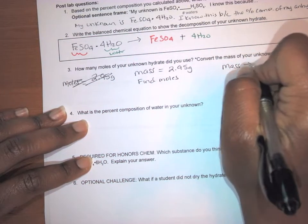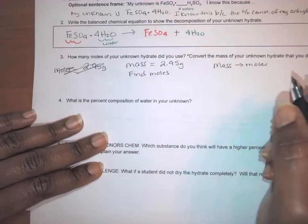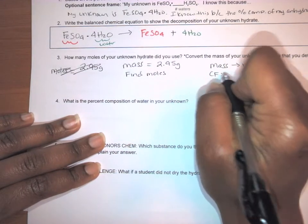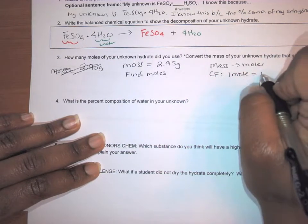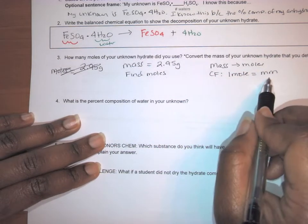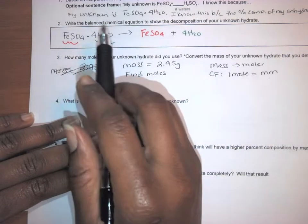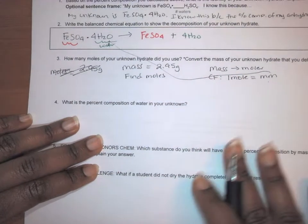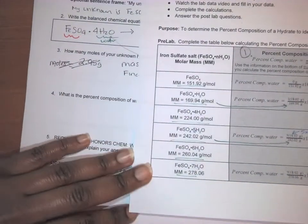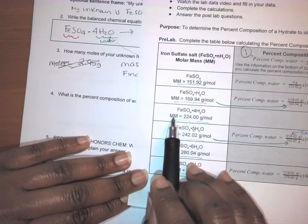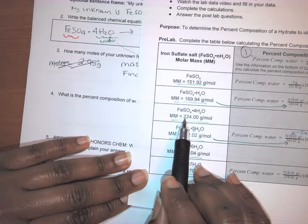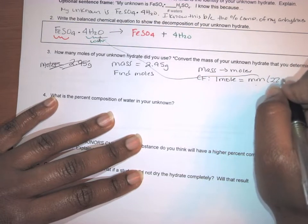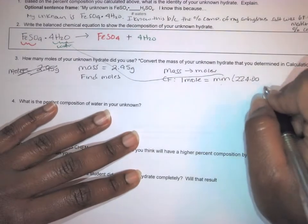So I'm going from mass to moles. Remember we did this. And in order to go from mass to moles, I'm going to use the conversion factor. One mole is equal to the molar mass. So I've already identified my hydrate as FeSO4·4H2O. So I'm going to use that molar mass. So I'm going to use the molar mass of whatever my hydrate is. So go ahead and you look on this table here in the beginning, the first page of your lab, find the molar mass that's written underneath of that hydrate. So 224.00 grams.